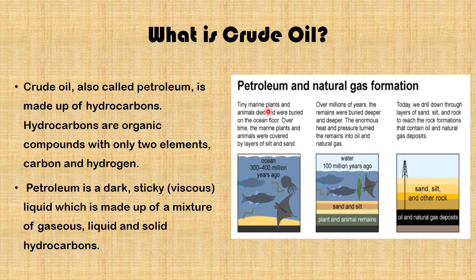This picture shows petroleum and natural gas formation. Tiny marine plants and animals died and were buried on the ocean floor. Over time, the marine plants and animals were covered by layers of silt and sand — over 300 million years ago. Over millions of years, the remains were buried deeper and deeper, and the enormous heat and pressure turned the remains into oil and natural gas.